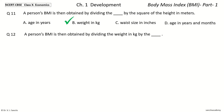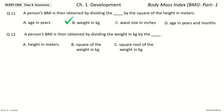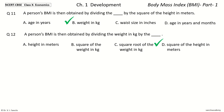So a person's BMI is then obtained by dividing the weight in kilograms by the dash. The options are: height in meters, square of the weight in kilograms, square root of the weight in kilograms, square of the height in meters. And the answer is square of the height in meters.